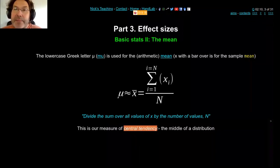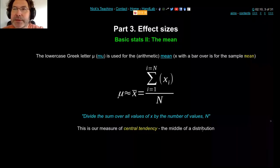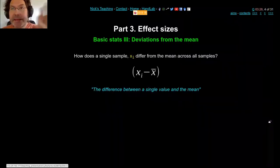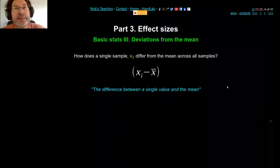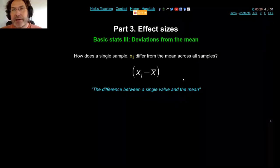The mean is our main measure of central tendency — the middle of a distribution. If you plot everyone's height, the mean is approximately the middle of that distribution. The mean is used everywhere. The second most important thing is the standard deviation — a way of describing how the data are spread, how variable the data are from the mean.